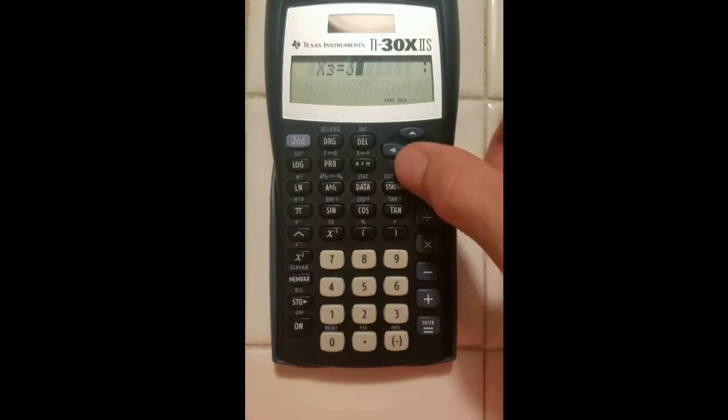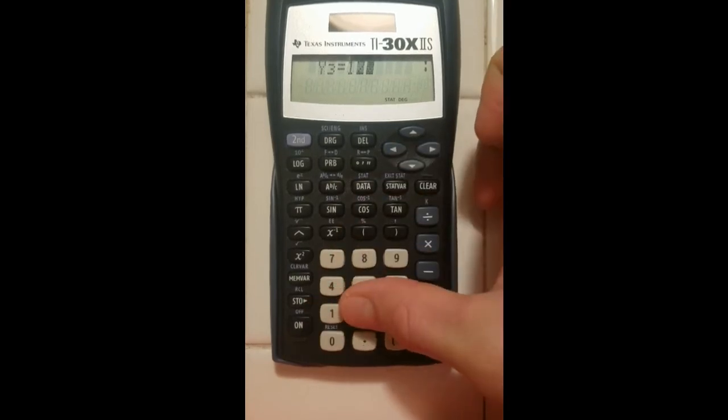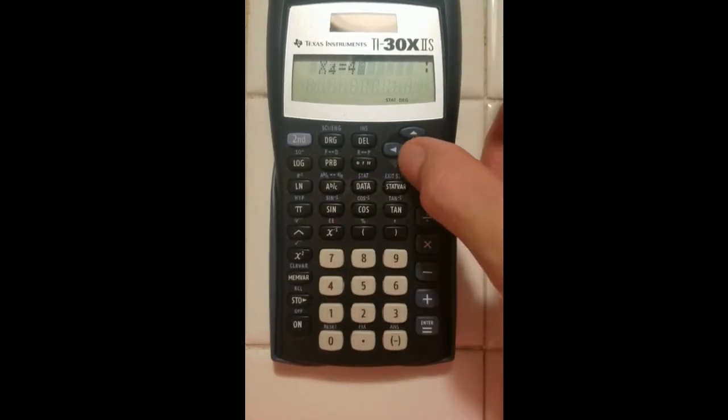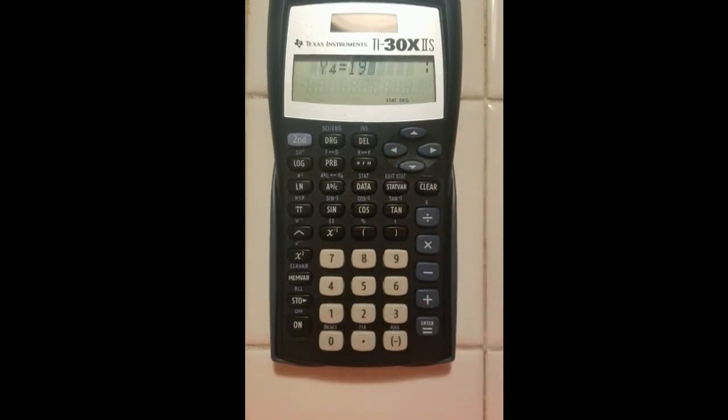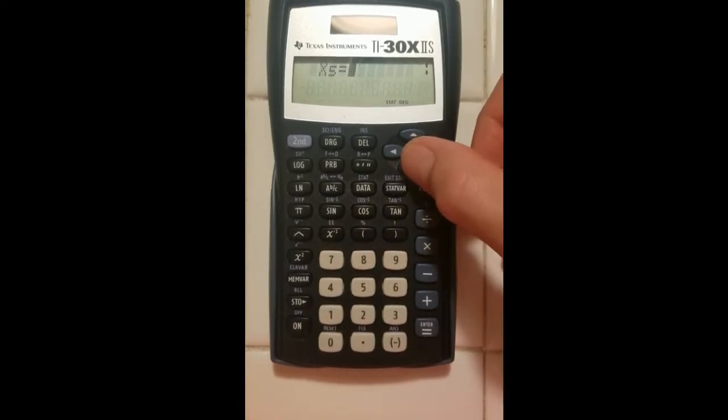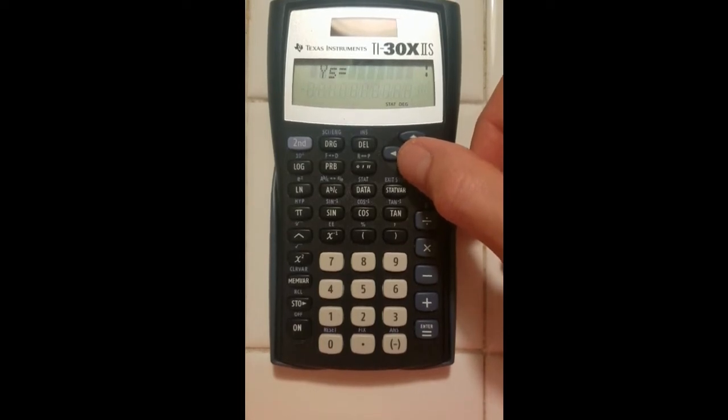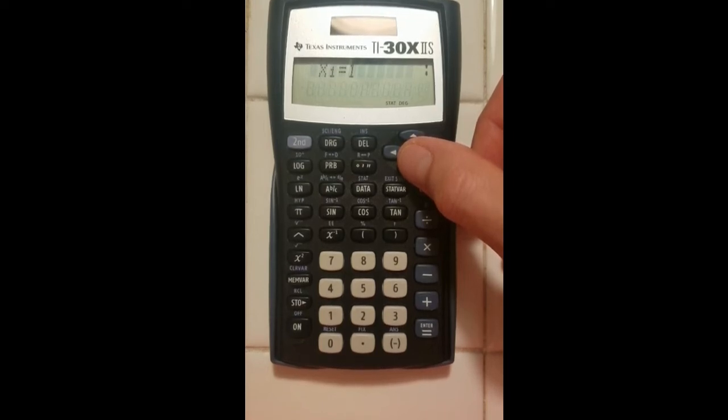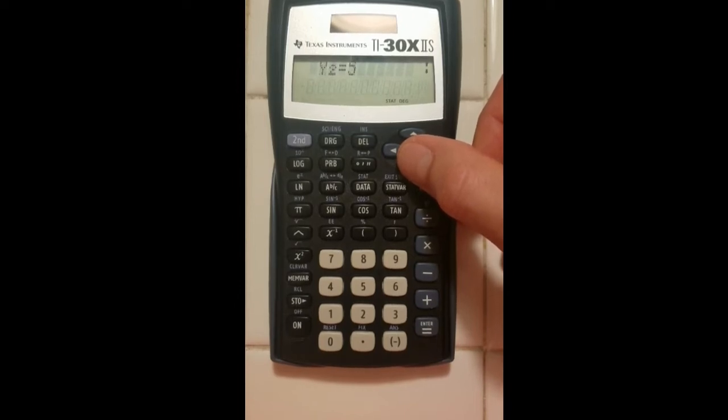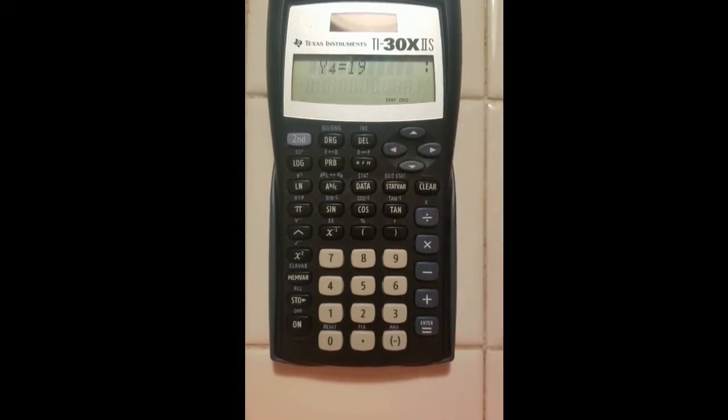Now when I'm all done I can press down and you notice it wants me to input another value, but I'm going to press down once more and once more again and I'm going to cycle through my data to make sure I entered everything correctly. So my x1 value is 1 and it went with 3, 2 went with 5, 3 went with 12, and 4 went with 19. Now that I'm satisfied with my data.